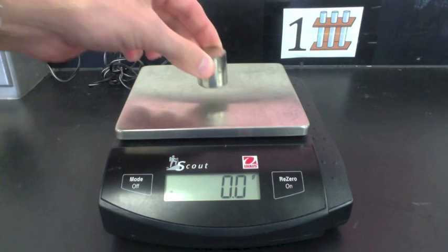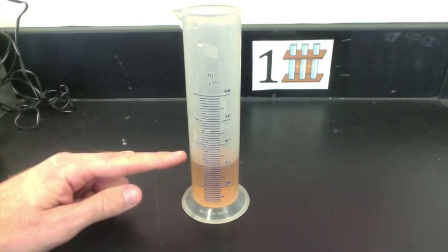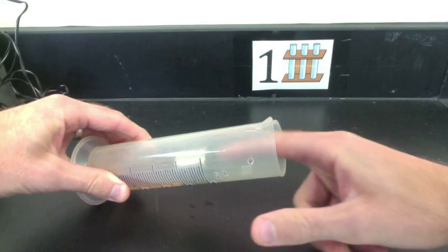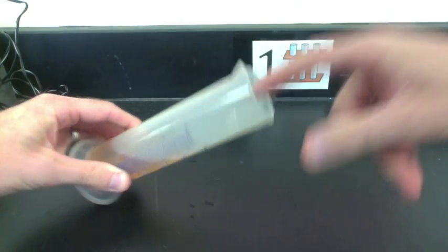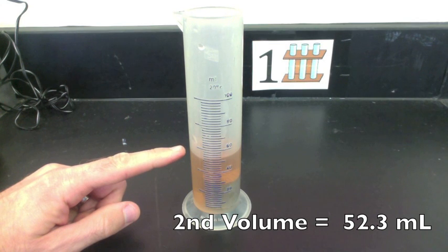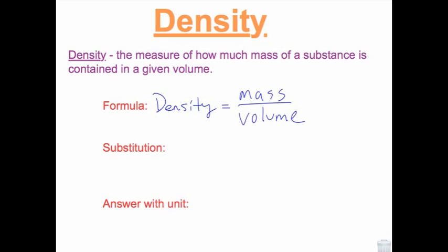Here is the mass of the metal cylinder. The initial volume of the water is 40 milliliters. When the metal cylinder is placed inside, the volume rises to 52.3 milliliters. Now you can calculate the density of the metal cylinder.